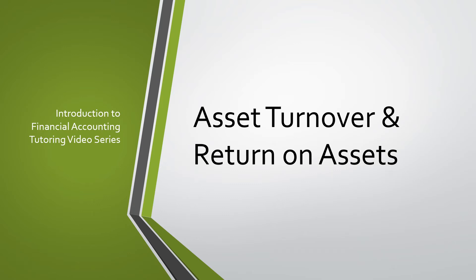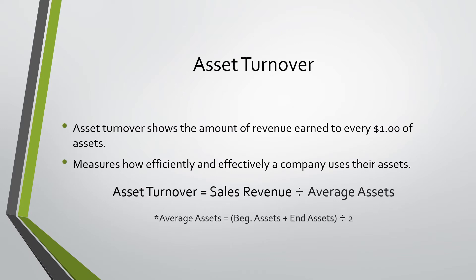Today we will be going over asset turnover and return on assets. Asset turnover shows the amount of revenue earned for every $1 of assets. This measures how efficiently and effectively a company uses their assets. Asset turnover equals sales revenue divided by average assets.